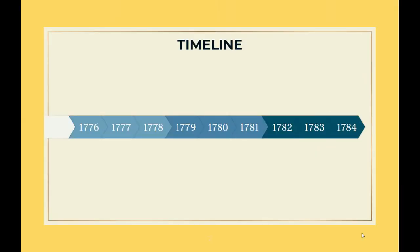Before we jump in, let's look at a quick timeline of during the revolution and then right after the revolution. In 1776, July 4th, 1776, the Declaration of Independence is signed. When they sign the Declaration of Independence, they are saying we want to be independent or separate from Great Britain.